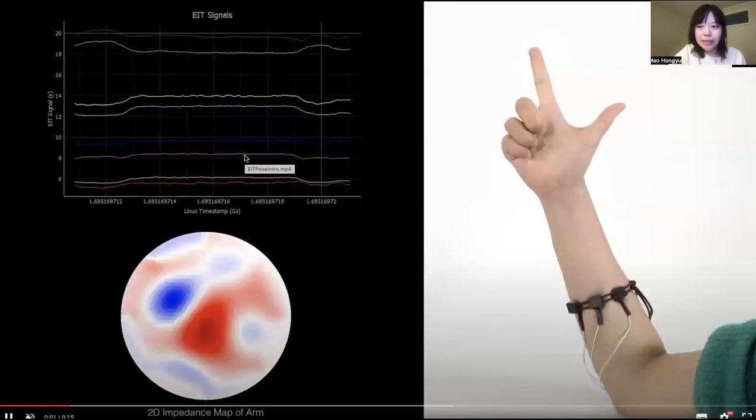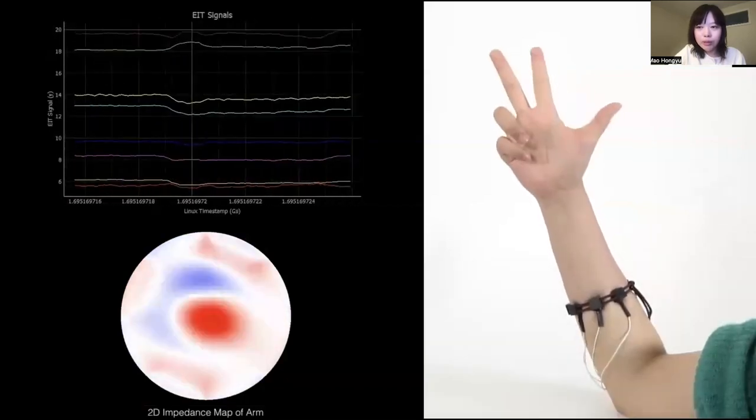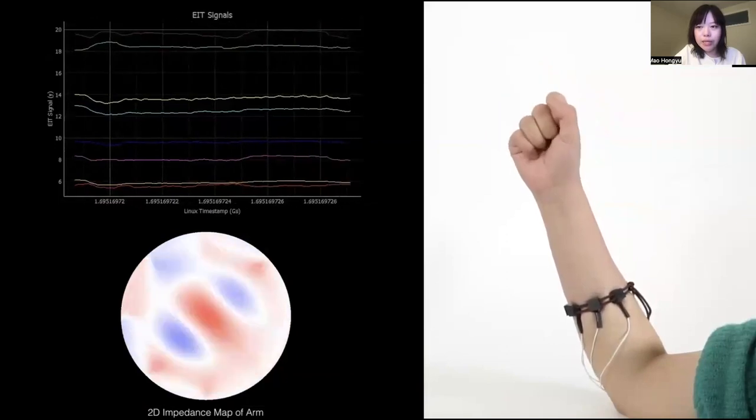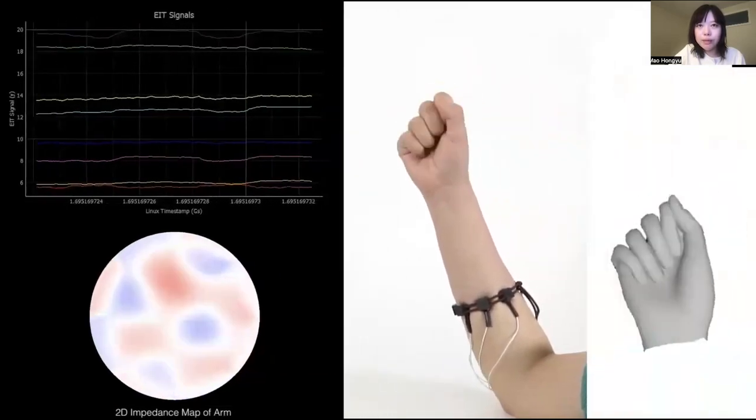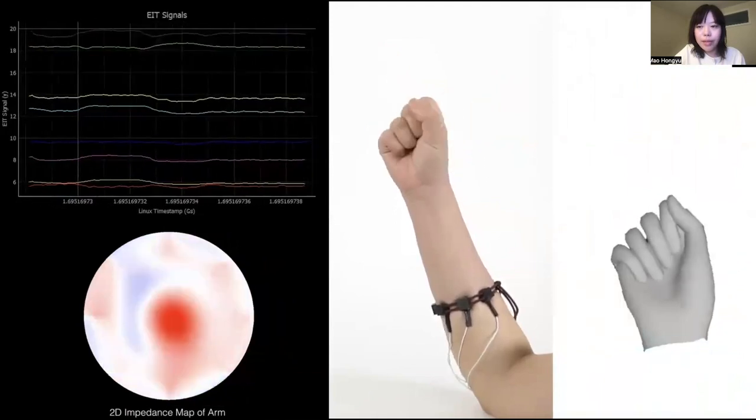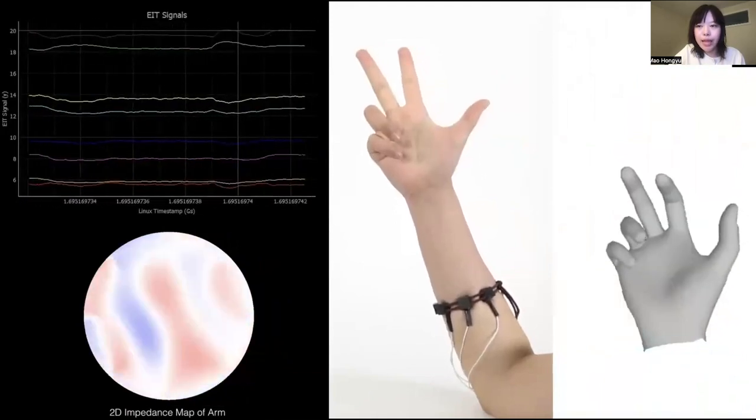To this end, we propose EITPose, a wrist-worn device using electrical impedance tomography to model the impedance distribution of user's forearm and continuously estimate 3D hand pose.